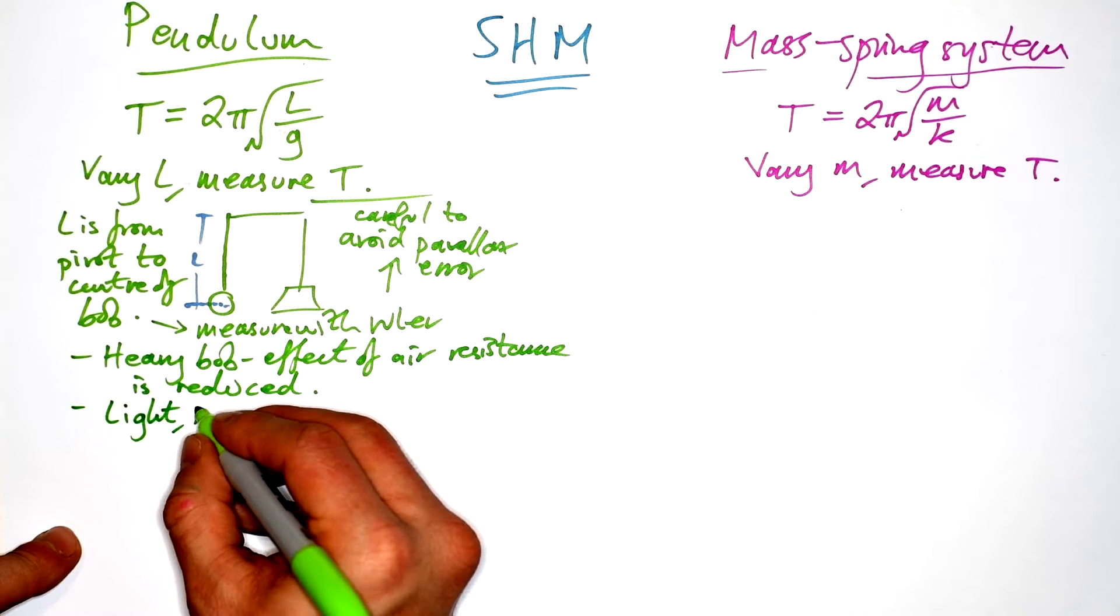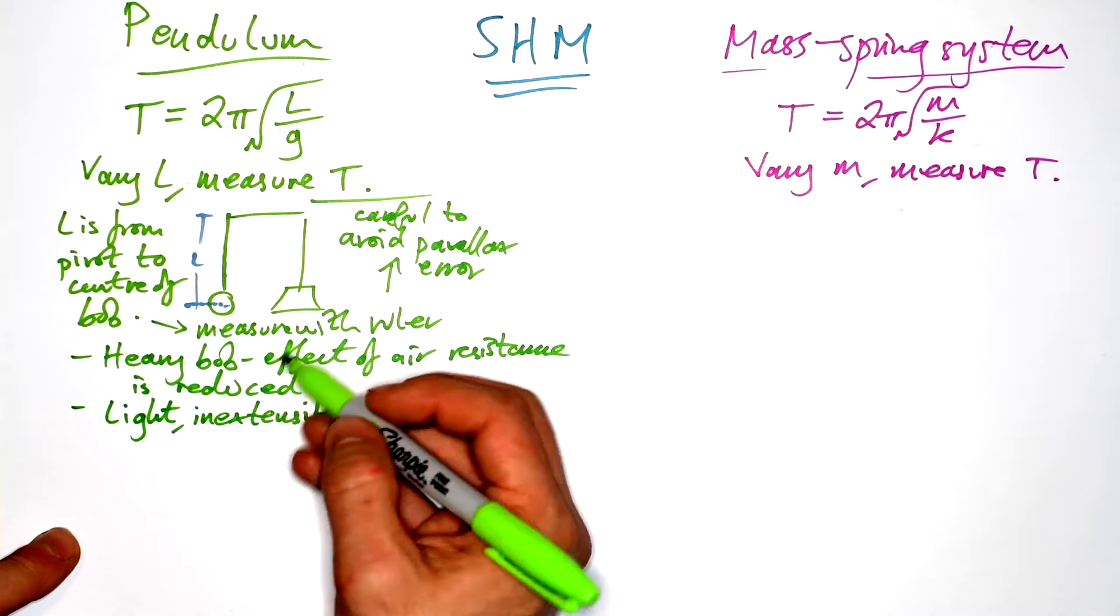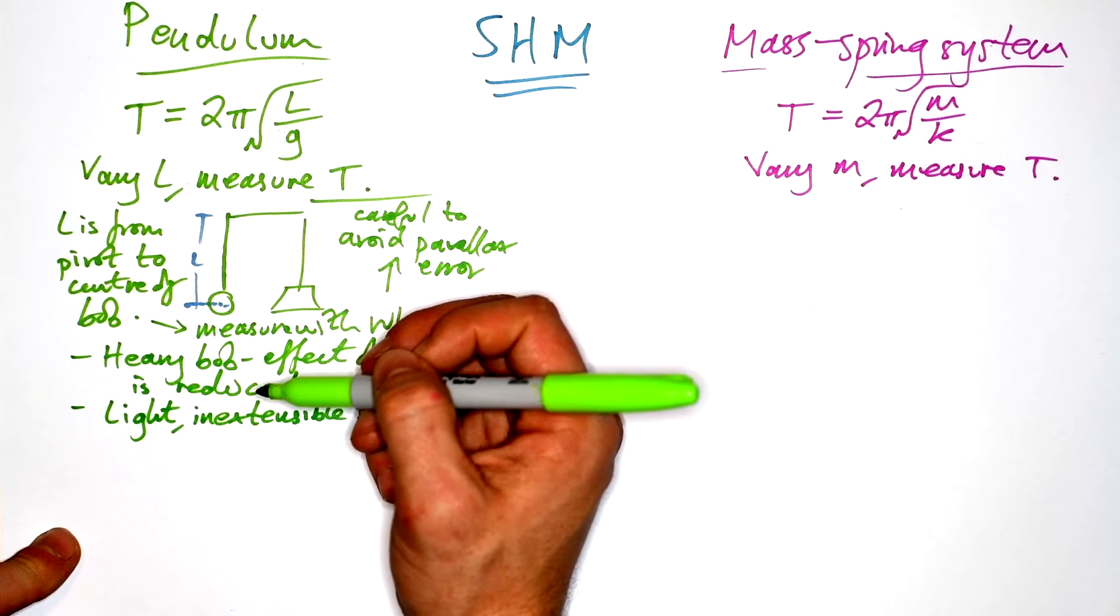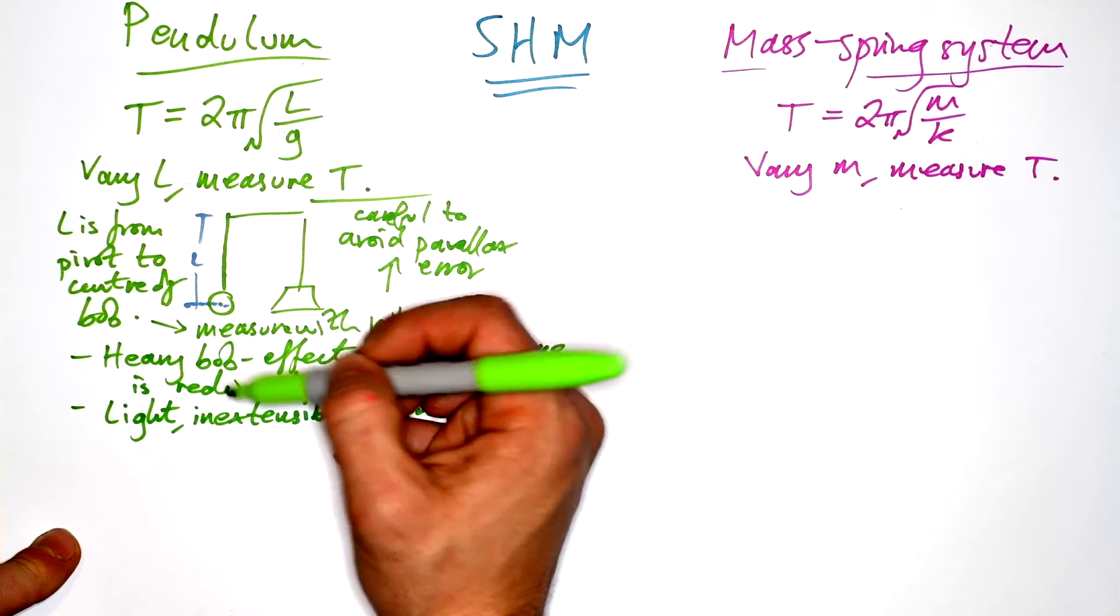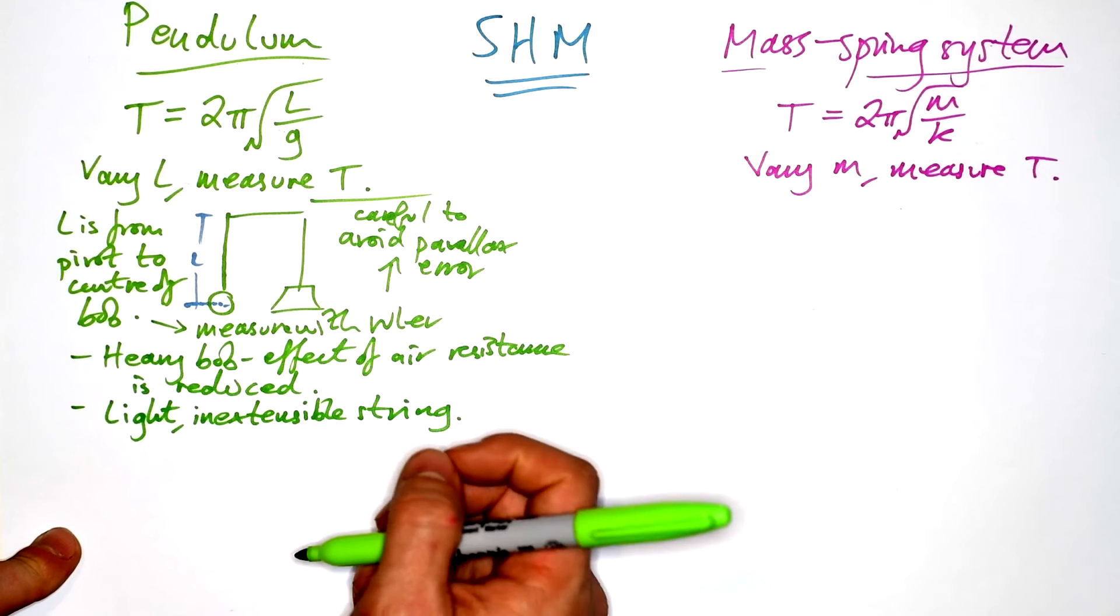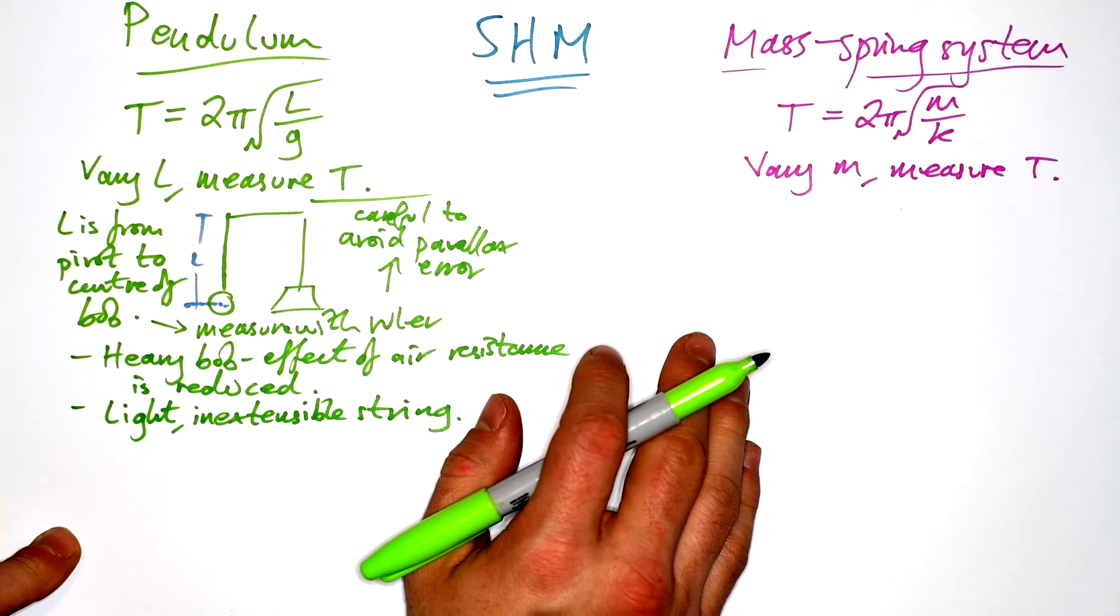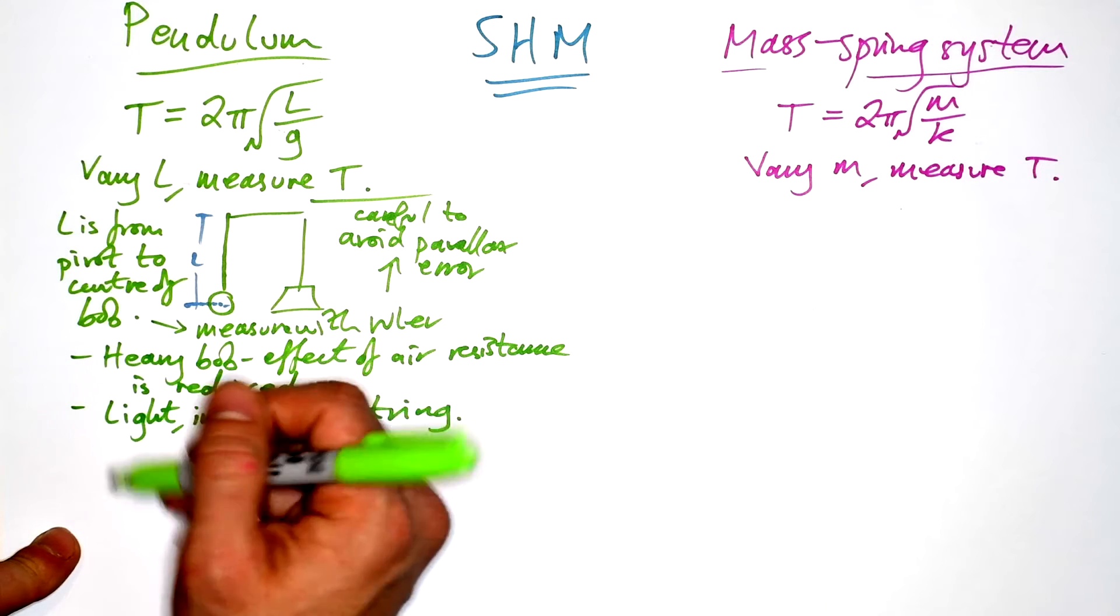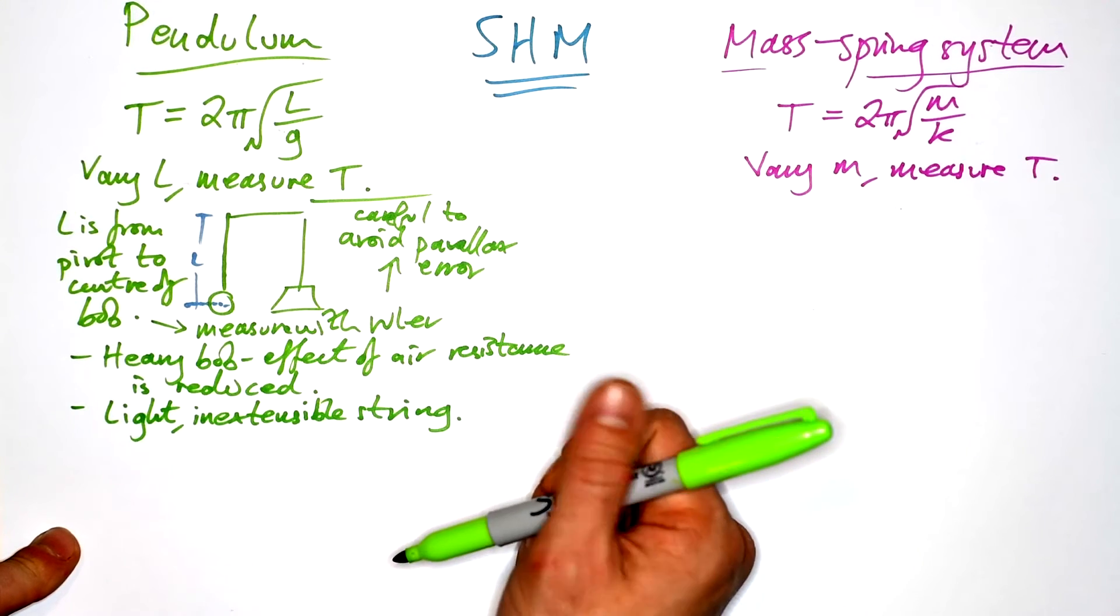We want a light, inextensible string. If it's light, then that means that the center of mass is still going to be at the bottom, as opposed to shift it up a little bit. And if it's inextensible, then that means that the length of the string will stay constant, even when there's tension on it as it goes through, especially at equilibrium.